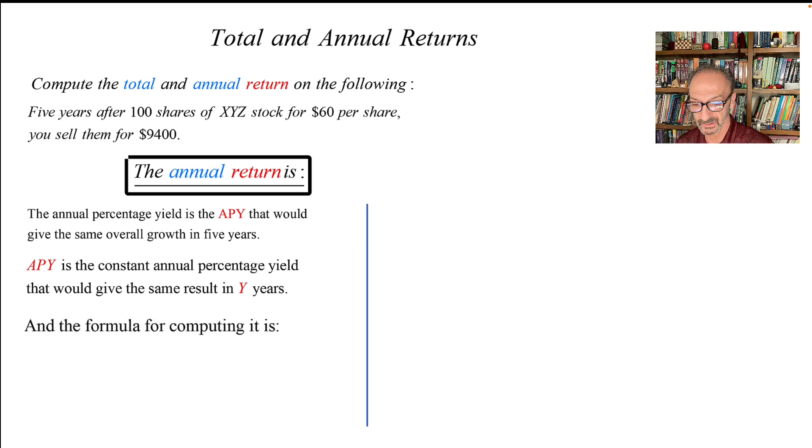And the formula for computing it is the following: APY equals A over P, where A is the return, which is $9,400, over the principal, the starting amount, which is $6,000, to the power 1 over Y. And Y is the five years, then we subtract one.